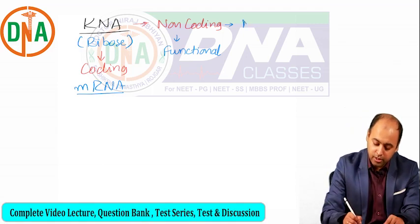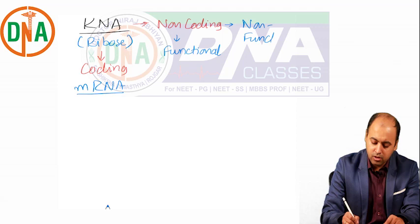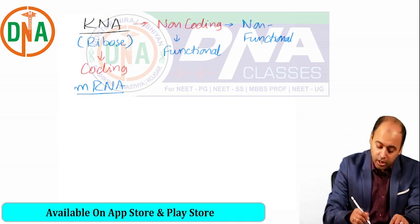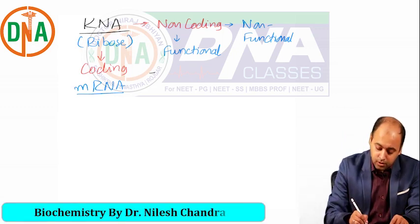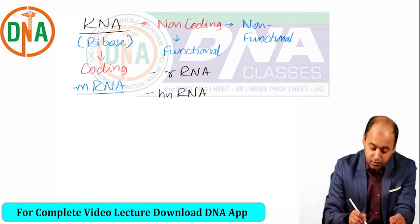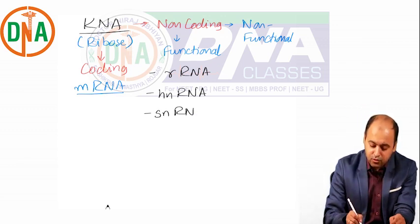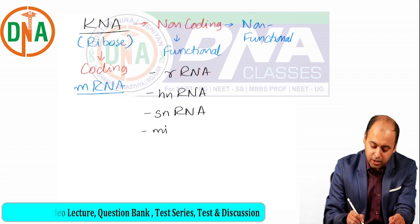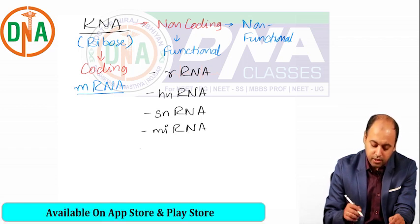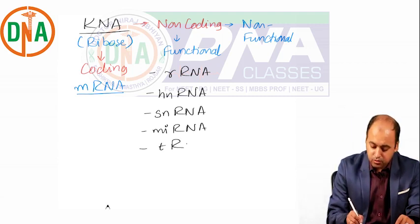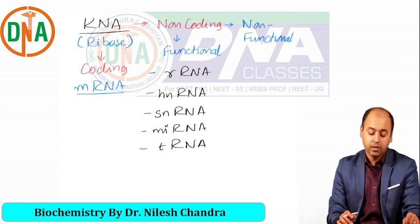The different types of functional non-coding RNA include the ribosomal RNA, the hnRNA (that is heterogeneous nuclear RNA), the snRNA (small nuclear RNA), the micro RNA, and finally what is known as the transfer RNA. So these are the different types of RNA that we have.